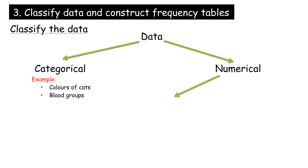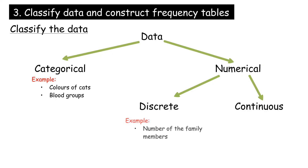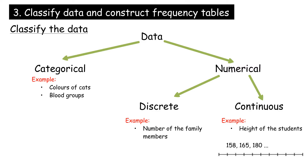Numerical data is numerical information — numbers. Numerical data can be discrete or continuous. Discrete data can only take certain values, like whole numbers — for example, the number of family members. Continuous data can take any value within a range — for example, the height of students.